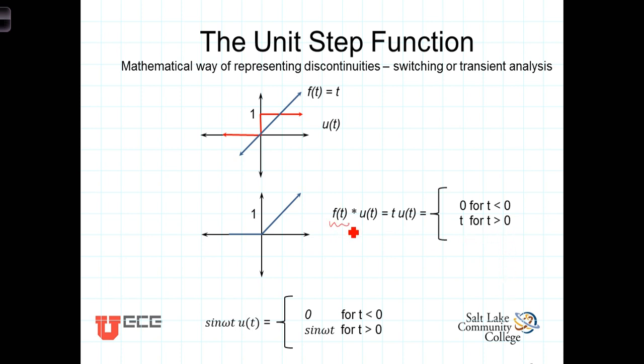Now, this f of T can be any arbitrary time domain function. For example, if we let f of T equal the sine of omega T, we have then sine omega T times u of T, which would be zero for T less than zero, once again, because the unit step function is zero for T less than zero. And for T greater than zero, we would have just the sine of omega T.